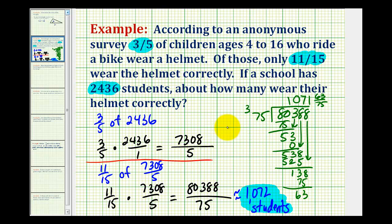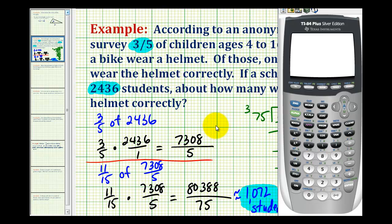Now I do want to show you quickly how you could have solved this using the calculator. We'll follow the same process. We'll just do the calculations on the calculator. We're first going to multiply 3/5 and 2,436. And we'll leave it in decimal form. This is the same as 7,308 all over 5. Then to determine 11/15 of this number, we'll multiply 11/15 and the previous answer of 1,461.6. And again, you can see if we round to the nearest student, we are going to have 1,072 students. Which does verify our answer.